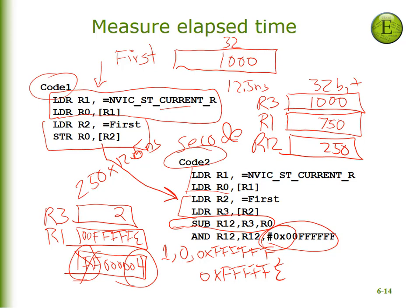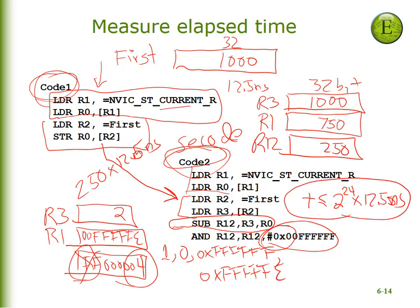This sequence of operations allows you to measure the elapsed time between the execution of the first code and the second code. All is fine as long as the total time you're measuring is less than 2 to the 24th times 12.5 nanoseconds, which will be correct in this particular lab. That's a brief introduction to how we're going to use SysTick in this lab. There's lots more fun stuff about SysTick that we'll use in the next lab, but these are the only things you need to know to do lab 4. Good luck and have fun.